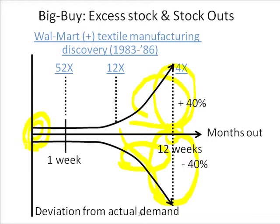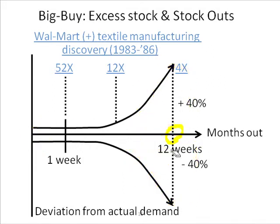So it was a supply chain math breakthrough. Now, that's all fine and good, but how does that apply to distributors? I know plenty of distributors that think an item that turns four times a year is a good item, and they don't realize the hidden excess stock costs and the hidden stockout costs that they have.